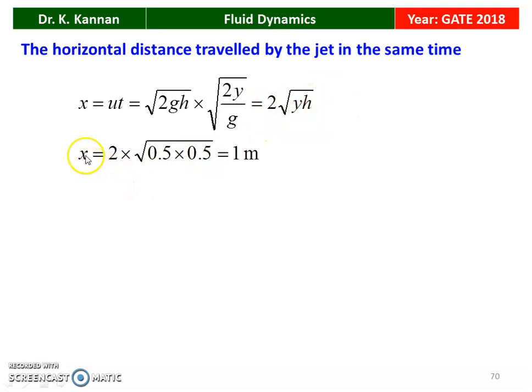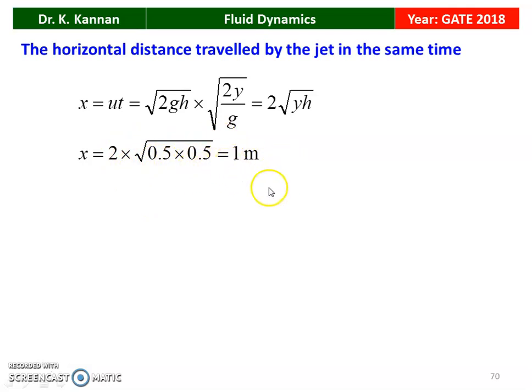Substituting y = 0.5 and h = 0.5: x = 2√(0.5 × 0.5) = 1 meter. So the distance travelled by the jet is 1 meter.